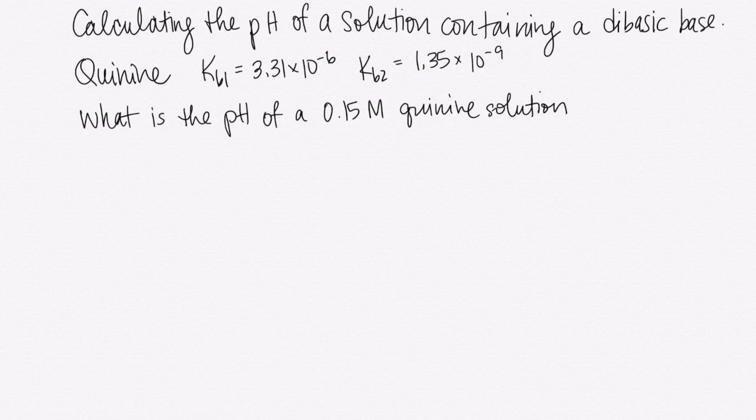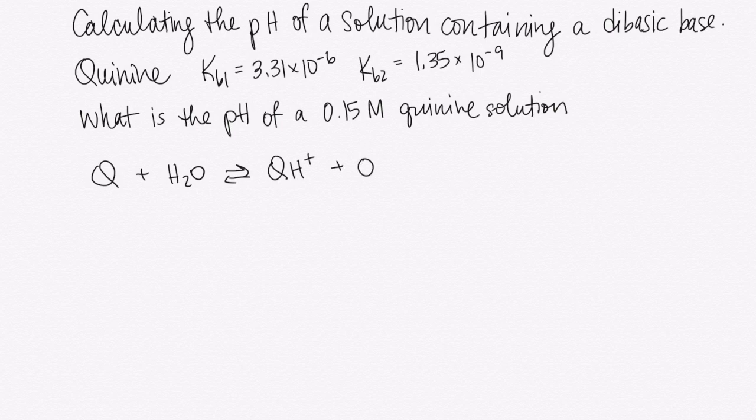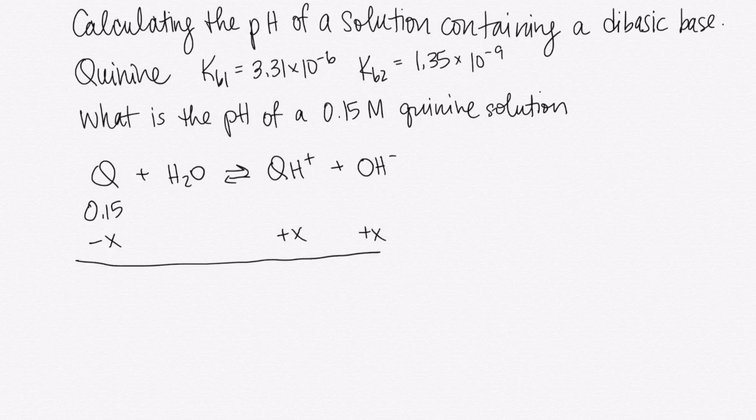So I'm going to write out my equation for our Kb1. I'll just call the base Q, and we're going to make QH+ and OH-. We're starting out with 0.15 molar quinine, we lose a little bit, and we gain some of the conjugate acid and some hydroxide, and at equilibrium we would have these concentrations.